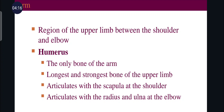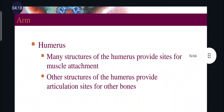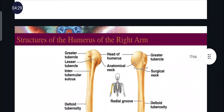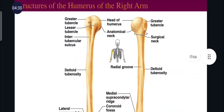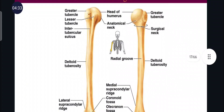The humerus articulates with the radius and ulna at the elbow. Many structures of the humerus provide sites for muscle attachment, while other structures provide articulation sites for other bones.